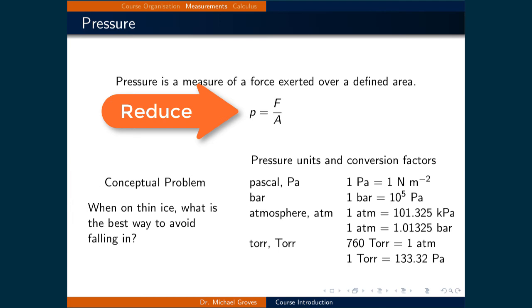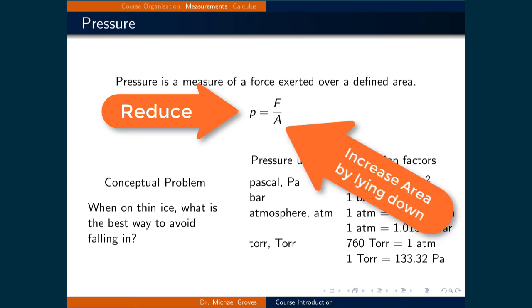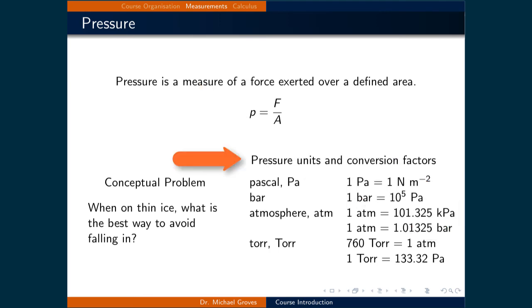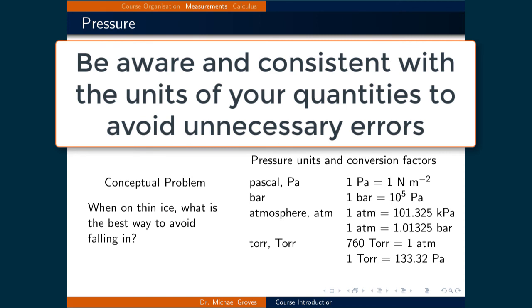When you are standing, the area that your weight acts over is that of your feet. If you lie down, the area goes up, since the force is now distributed over your entire body. Therefore, the pressure you exert goes down. Pressure can be measured in many different units. In SI, the units are pascals, which is defined as a newton per meter squared. Another common unit for pressure is the atmosphere. When performing calculations with pressure, be careful that you are aware and consistent with your units to avoid making unnecessary mistakes.